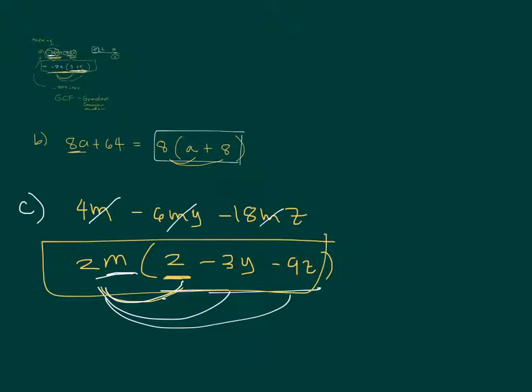If you check, there are no more common factors among 2, 3, and 9 that satisfy all three terms simultaneously — 3 divides 3 and 9 but not 2 — so 2m is indeed the greatest common factor, and the factoring is complete.